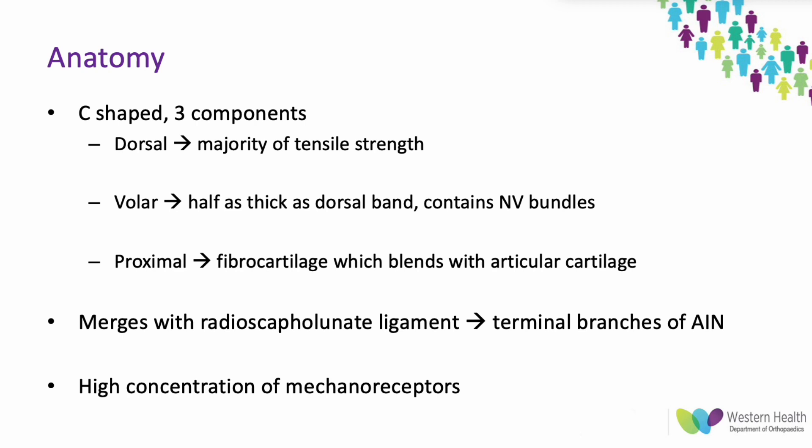In terms of anatomy, the scapholunate ligament is comprised of three components. The dorsal component provides the majority of the tensile strength and has the greatest constraint to translation between the scaphoid and lunate. The volar component is half as thick as the dorsal band and contains the neurovascular bundles.